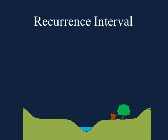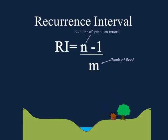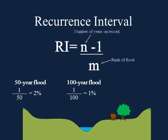A recurrence interval uses statistical techniques to determine a certain flood's likelihood to occur within a given time period. For example, a 100-year flood has a probability to occur once every 100 years, or a 1% probability every year. The more yearly data received by the gauging station, the more precise the recurrence intervals.